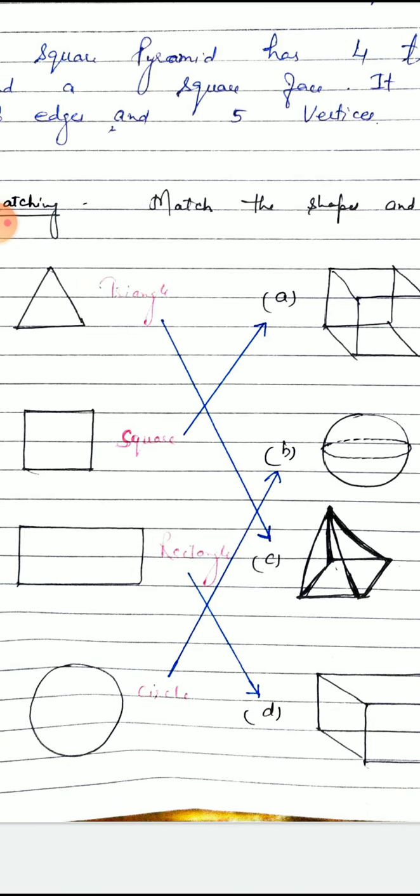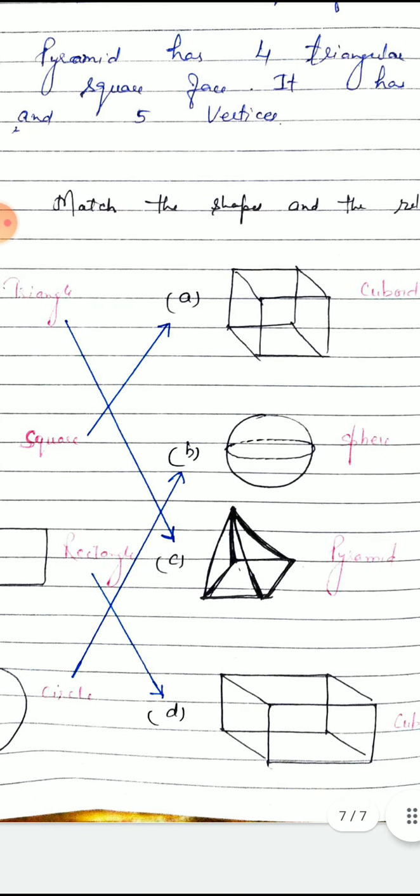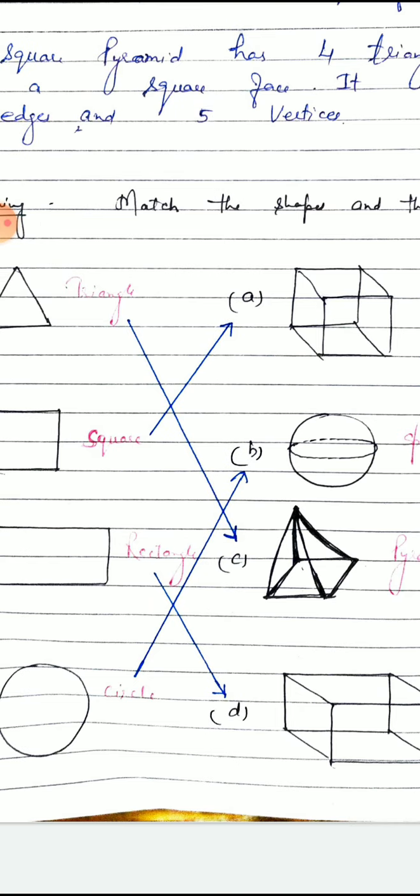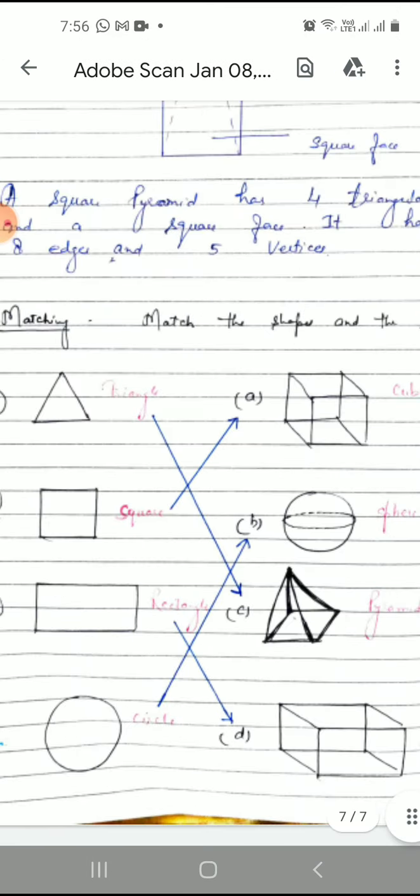Which 2D shapes resemble 3D shapes? Actually, we can prepare a pyramid by this triangle, and from square you can make cube, and from rectangle cuboid is prepared, and from circle you have to make this sphere.